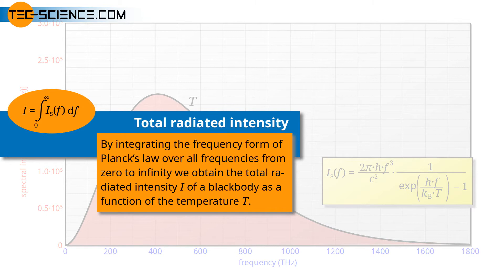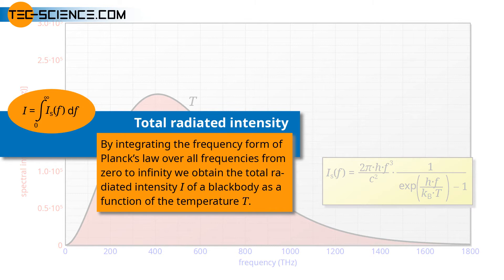Mathematically, this means that the Planck function must be integrated over all radiated frequencies from zero to infinity. This then finally leads us to the so-called Stefan-Boltzmann law. In the following, we carry out this integration in detail.